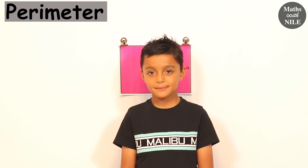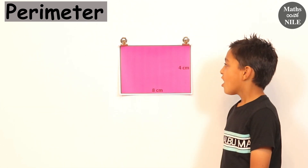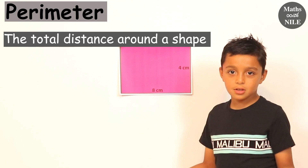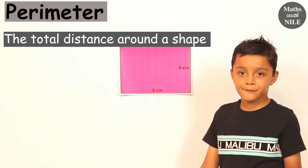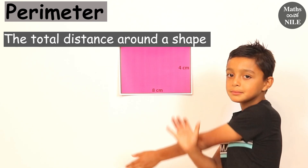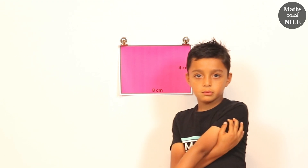Hi Niall, do you know what perimeter means? The total length around something. So the total distance around something.